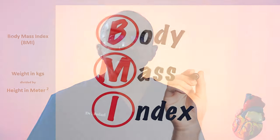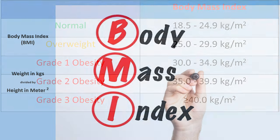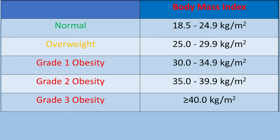In the United States, 35% of adults — roughly 100 million people — and 17% of children are obese. The body mass index is calculated by dividing the body weight in kilograms by the square of the height in meters. Individuals are classified as normal weight with a BMI of 18.5 to 24.9, overweight BMI 25 to 29.9, grade 1 obesity BMI 30 to 34.9, grade 2 obesity BMI 35 to 39.9, and grade 3 or severe obesity with a BMI more than 40.